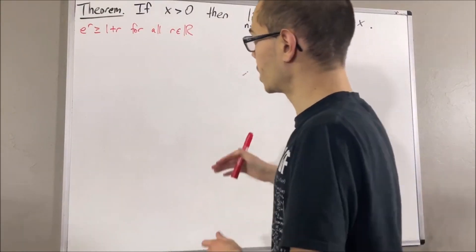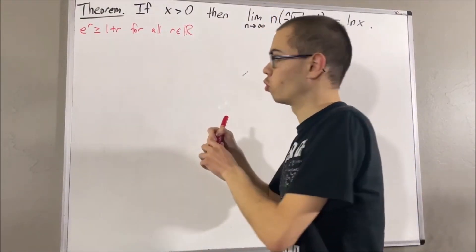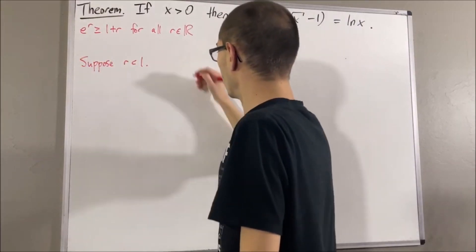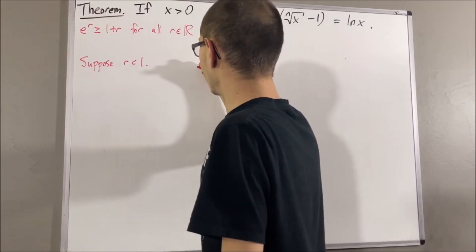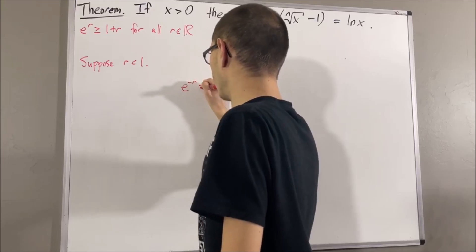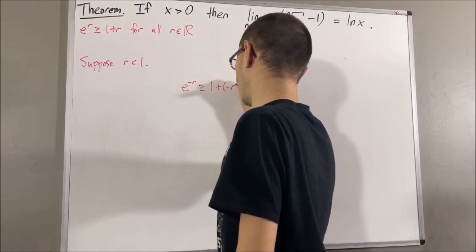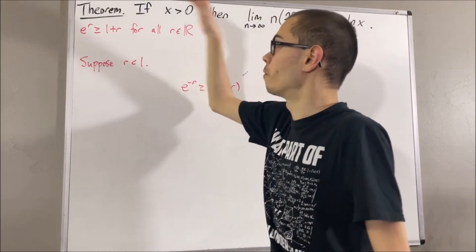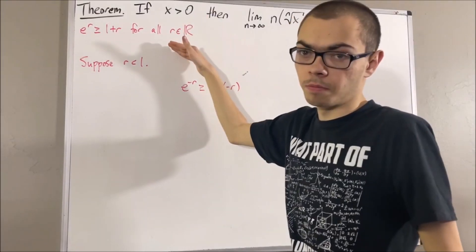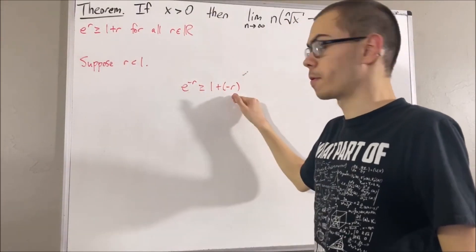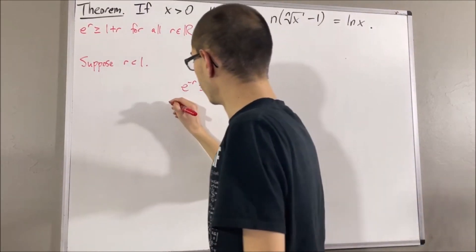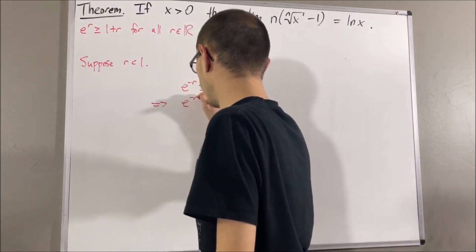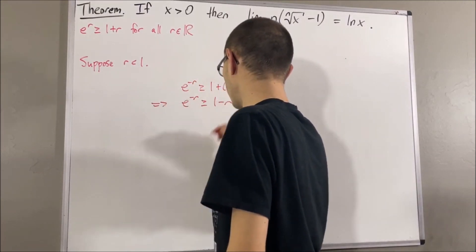If we consider a real number r less than 1, we know that e to the negative r is greater than or equal to 1 plus negative r, because this inequality works for every real number — so in particular, it must work for negative r. This is just saying e to the negative r is greater than or equal to 1 minus r.